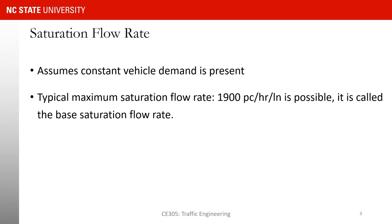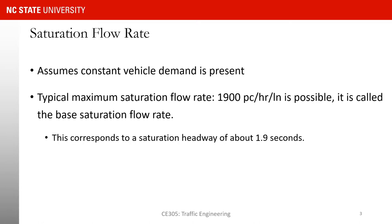Saturation flow rate assumes that there is a constant vehicle demand present. If you do not have enough demand going through the intersection, you won't be able to observe saturation flow rate. A typical saturation flow rate is 1900 passenger cars per hour per lane, and this is associated with a saturation headway of 1.9 seconds. If you put 1.9 seconds into the equation, you get a number very close to 1900.